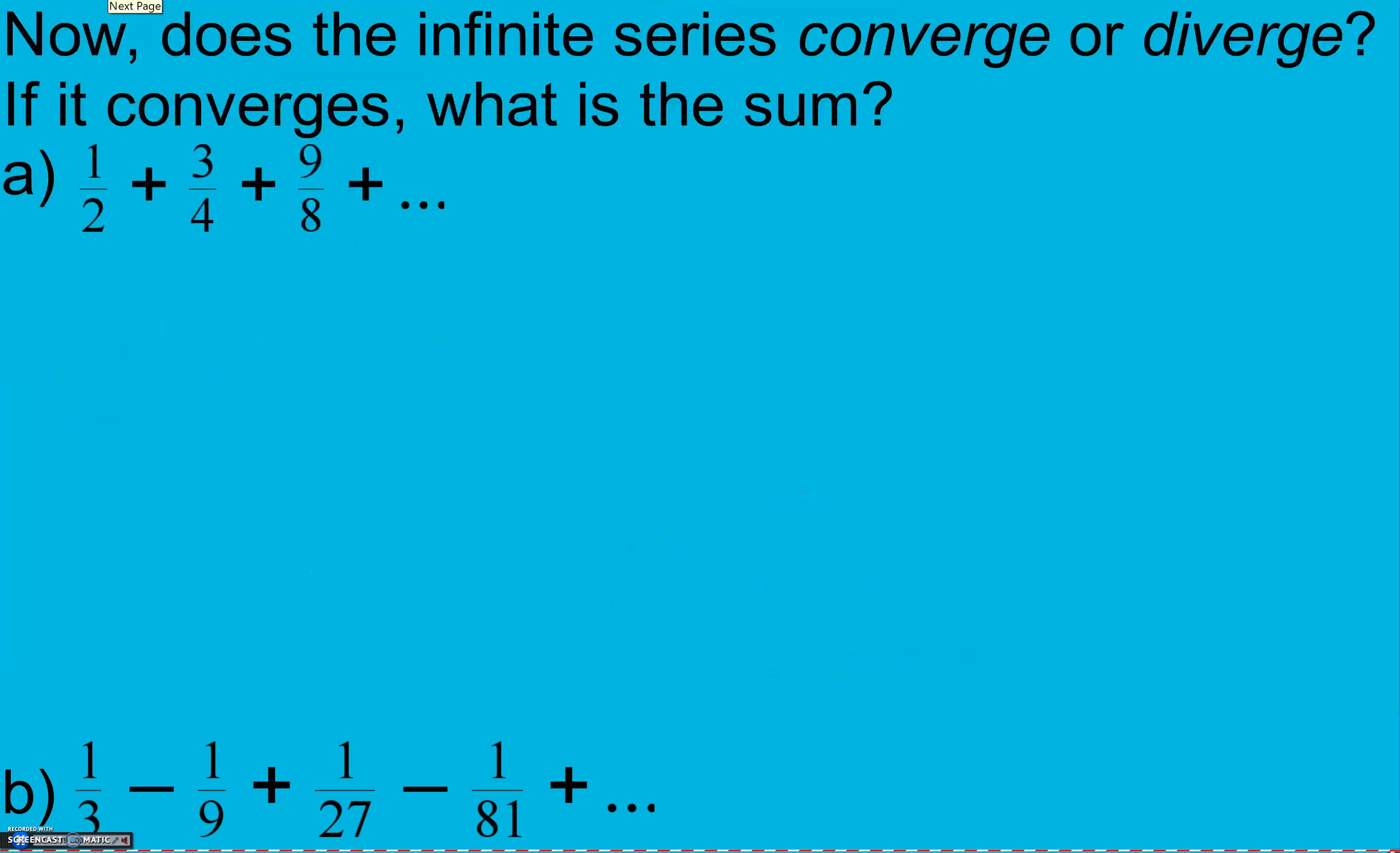Same thing here. Does the infinite series converge or diverge? If it converges, what is the sum? So here we need to find our common ratio. From one to three, I times three. From three to nine, I times three. From two to four, I times two. And four to eight, I times two. Which means my common ratio is every time I'm multiplying by three over two, which is greater than one. Which means this diverges. And when it diverges, we cannot find the sum.